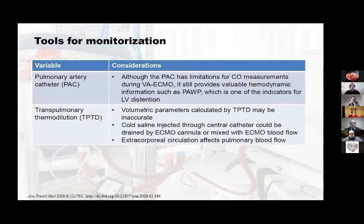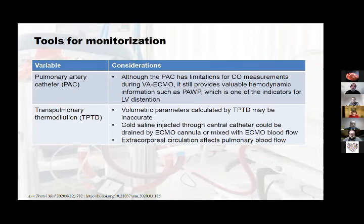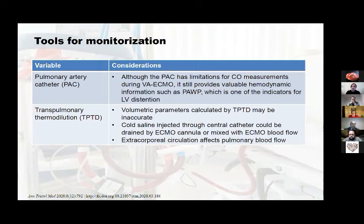Regarding monitoring tools in VA ECMO patients: the pulmonary artery catheter and transpulmonary thermodilution both have a major problem — they measure cardiac output by thermodilution, and because the ECMO introduces fluid with special temperature changes, cardiac output measurement is inaccurate with these monitors. However, they are still useful for measuring preload or global end-diastolic volume.